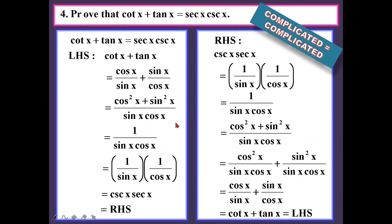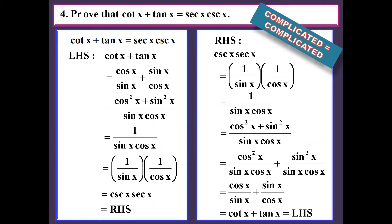If you are stuck with a complicated equation, work on both sides and rearrange them so that at the end the two workings will combine and create one perfect answer. Because when you move from the left-hand side you get one type of working, and when you move from the right-hand side you get another — somehow they combine and create the perfect answer. If you get a complicated question, just move from both sides and you will get it done very fast.